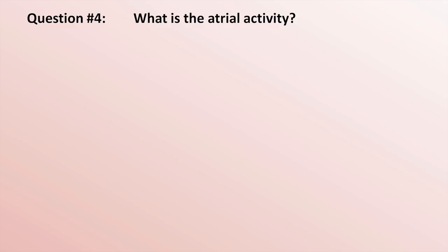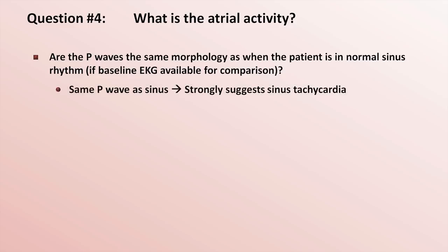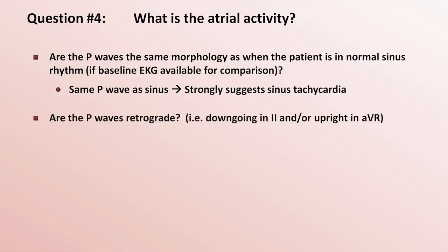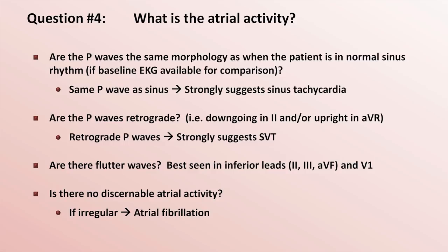Question 4: What is the atrial activity? First, are there P-waves at all? And if so, are they the same morphology as when the patient is in normal sinus rhythm, assuming a baseline EKG is available? If the P-waves look the same, it is highly likely — though not definitive — that the patient has sinus tachycardia. If the P-waves are retrograde in morphology, meaning downgoing in lead 2 and/or upright in lead AVR, it strongly suggests an SVT. The presence of sawtooth flutter waves is indicative of flutter, best seen in the inferior leads and often in V1. If there is no discernible atrial activity and the ventricular rhythm is irregular, it suggests AFib.